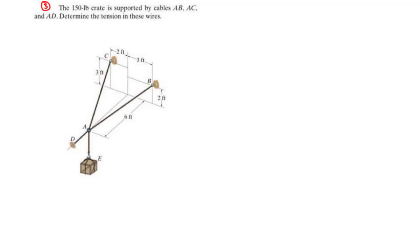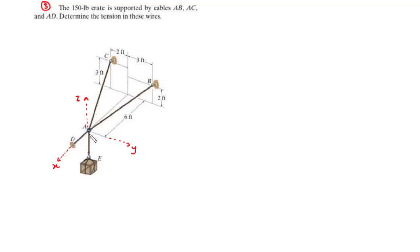Looking at this question, we are not given the coordinate axis, so we are going to use our own discretion. We say that the line along AD should be the X axis, this line should be the Y axis, and then we have this to be the Z axis. We are given the distances we need to move from A to B, from A to C, and from A to D along the X, Y, Z axes.